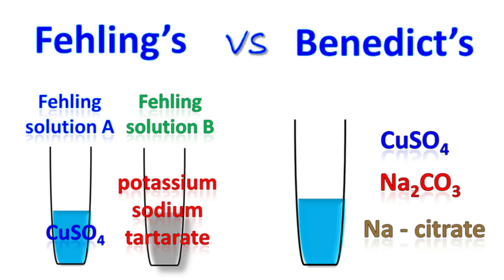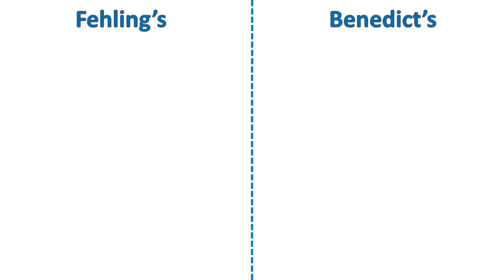Hey everyone, Quickbacker, Mr. Basics here. Let's talk about the difference between Fehling's and Benedict's test. Both Fehling's and Benedict's test are used to quantify the amount of glucose present in the urine. However, there are several differences which are to be considered.